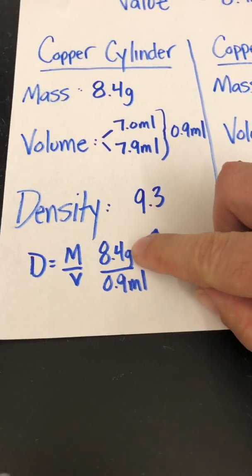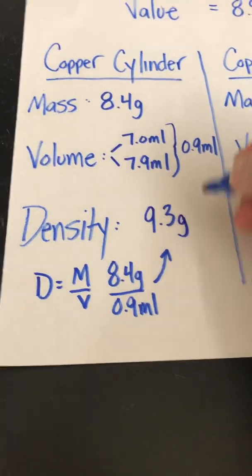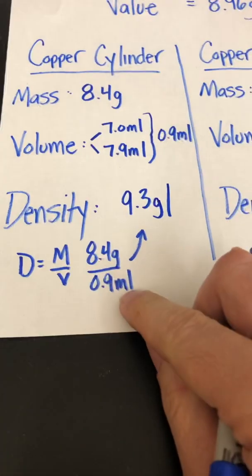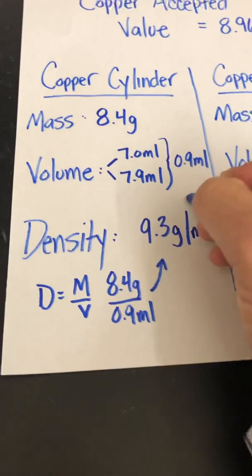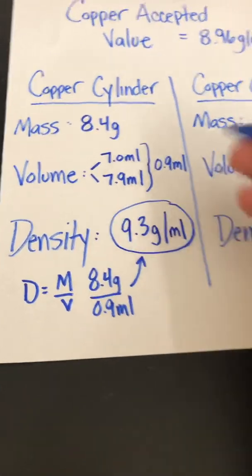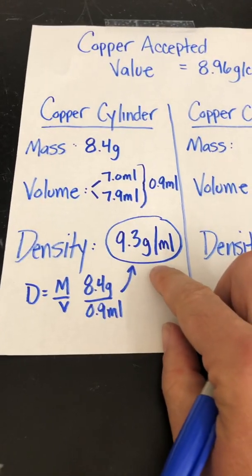Your numerator unit goes first. My denominator unit goes second. So my density here for the cylinder, 9.3 grams per milliliter.